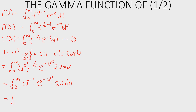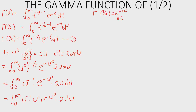This gives us the integral of u raised to the power minus 1, then u raised to the power of 1, times e raised to the power of minus u squared, multiplied by 2 du. Taking the constant 2 out, and using indices, u raised to the power minus 1 times u raised to the power 1 gives u raised to the power of 0, which equals 1. So we are left with 2 times the integral of e raised to the power of minus u squared, du.